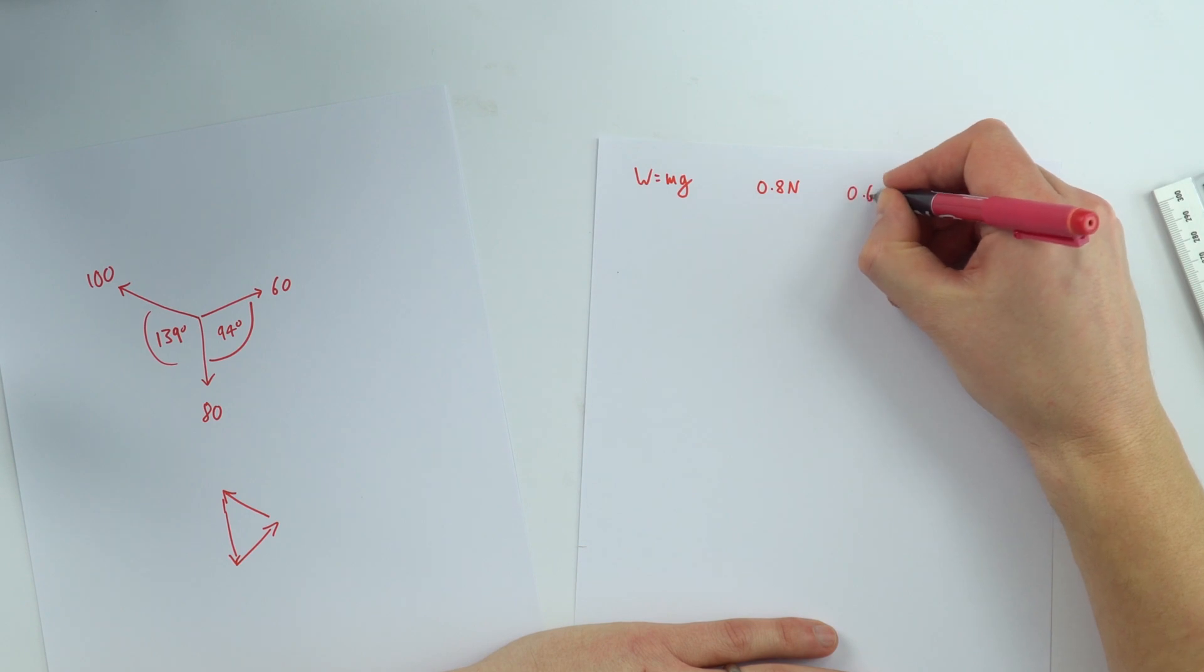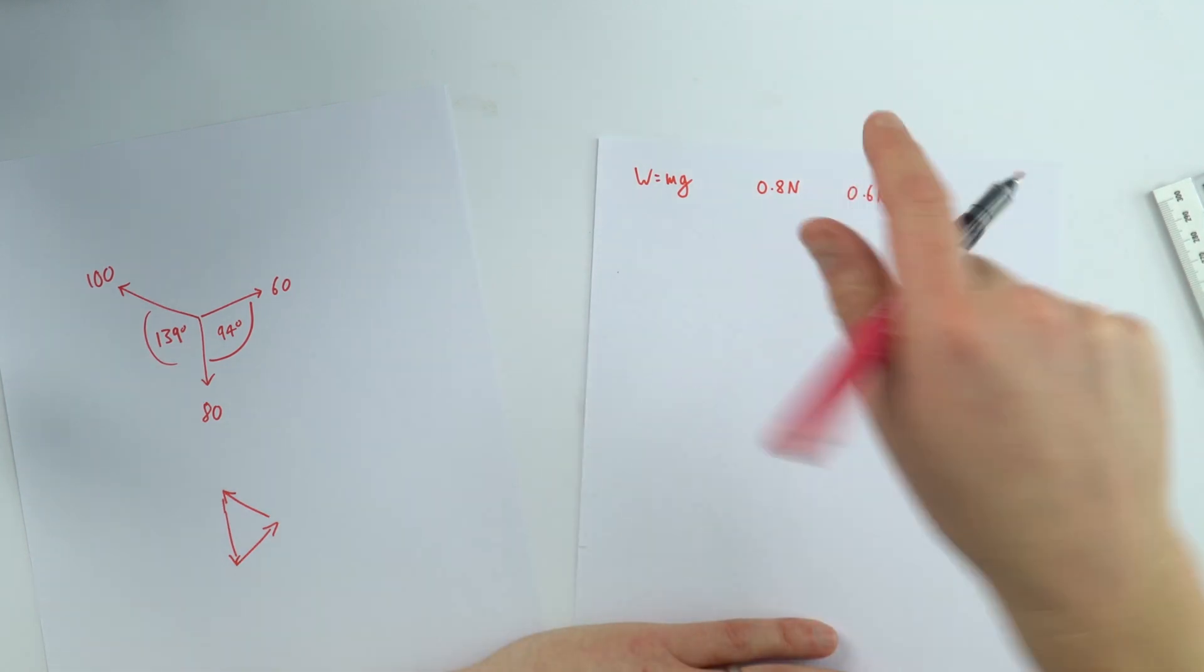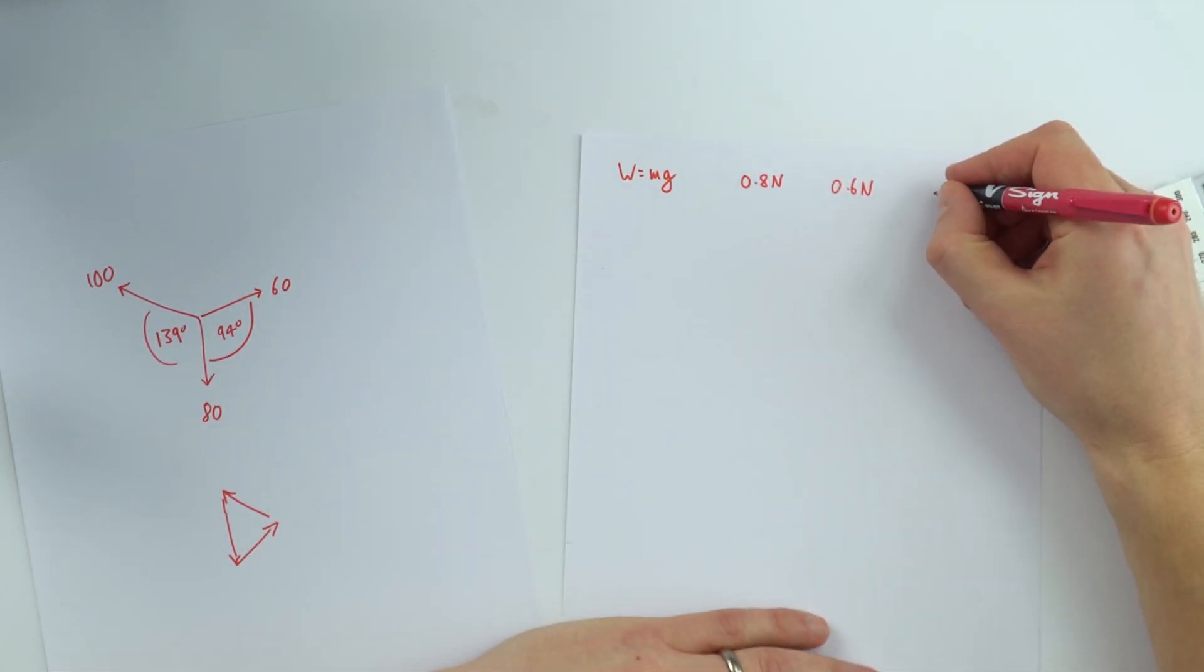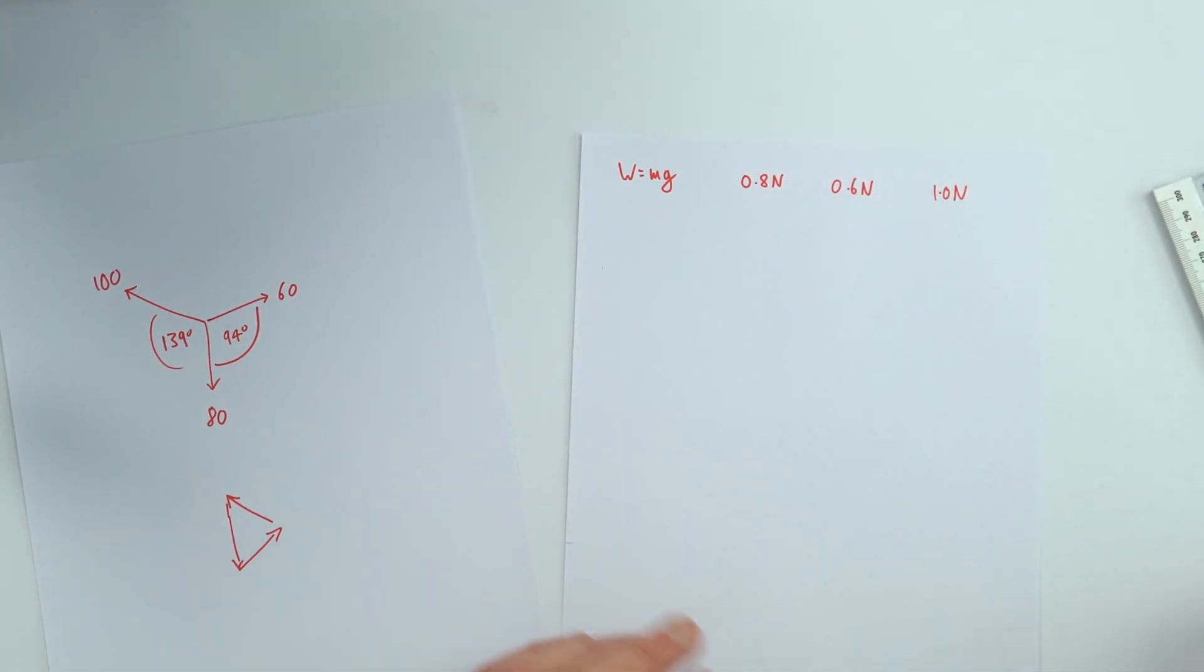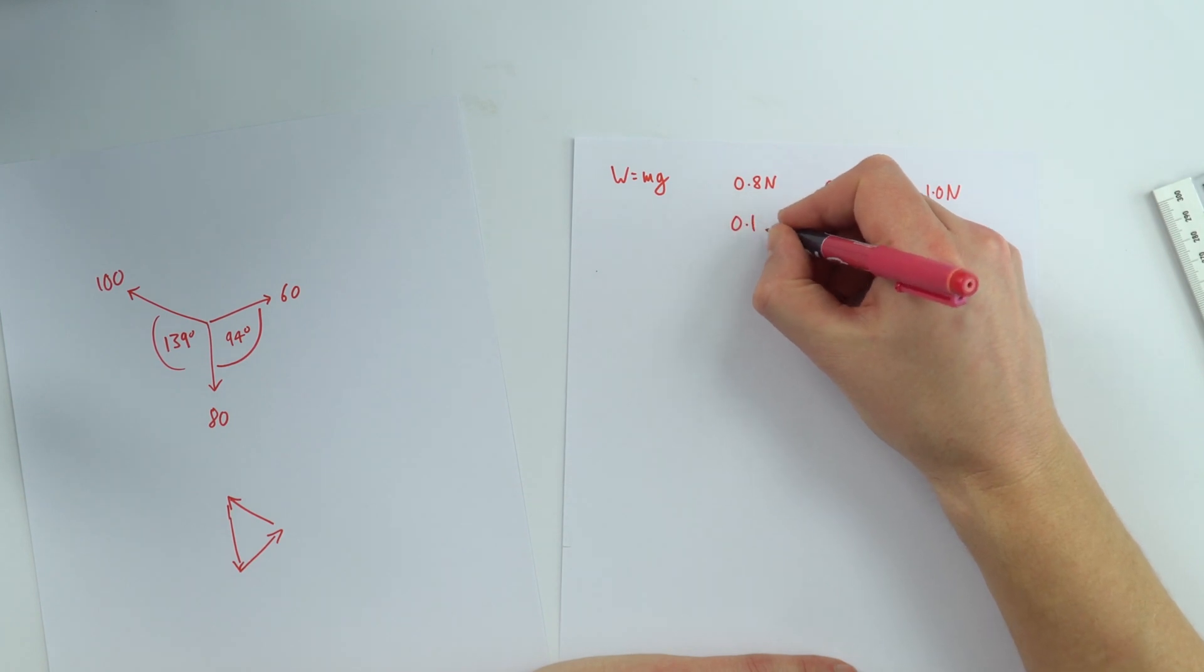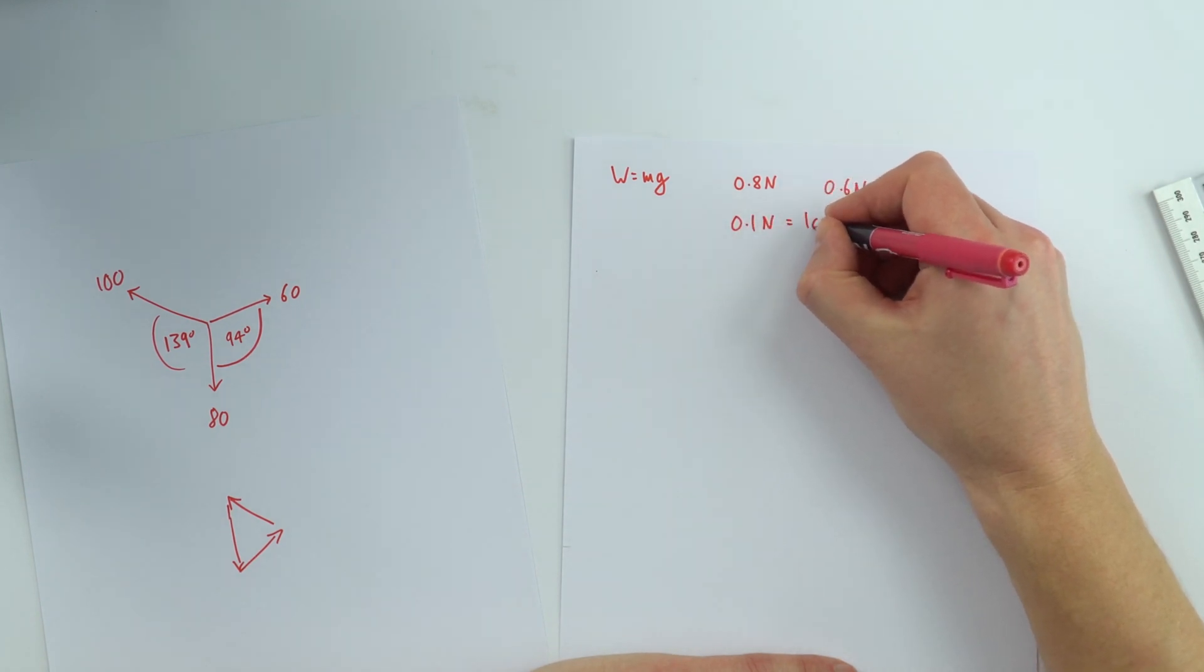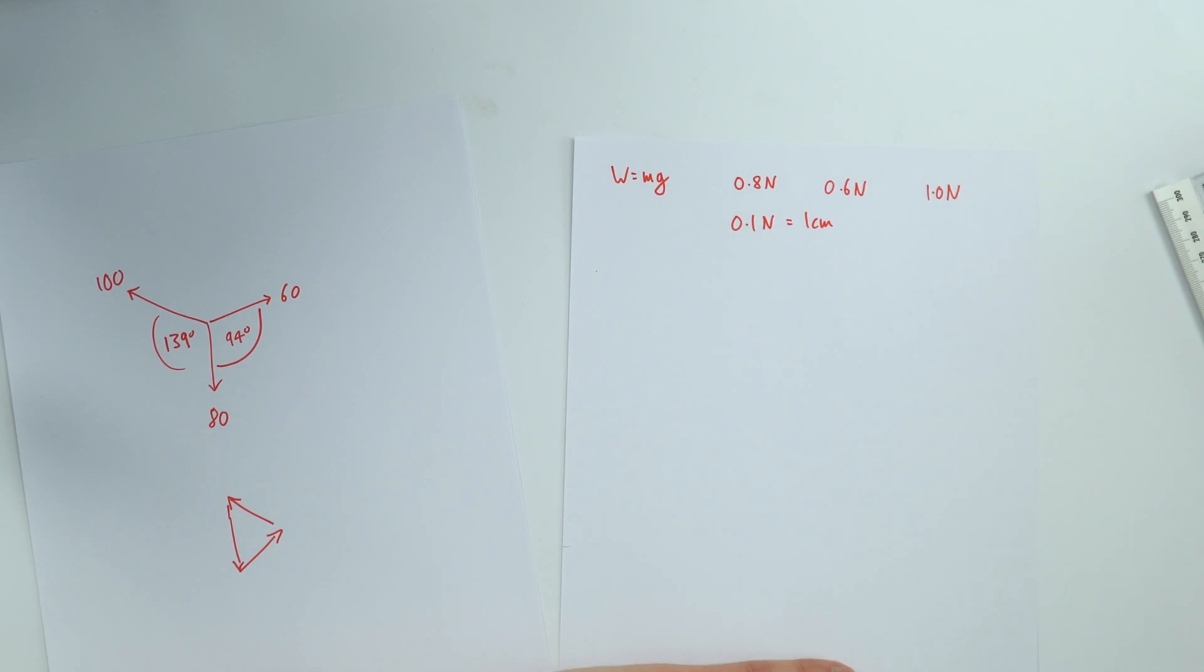We've got a force of 0.6 newtons acting to the right and to the top left we've got a force equal to 1.0 newtons. So there are the forces. Now what I'm going to do is say that 0.1 newton equals 1 centimeter when it comes to drawing my diagram.